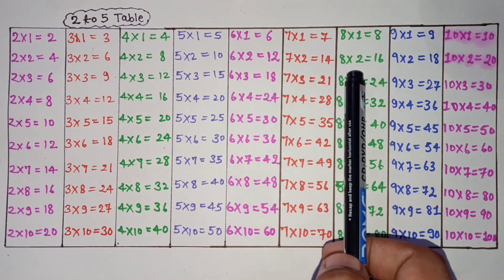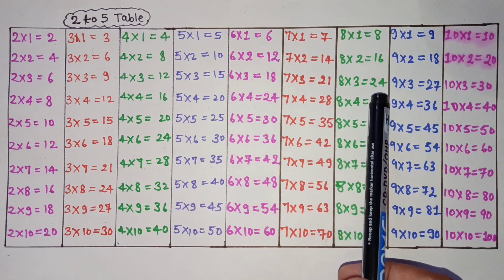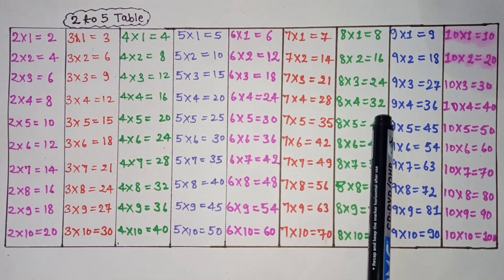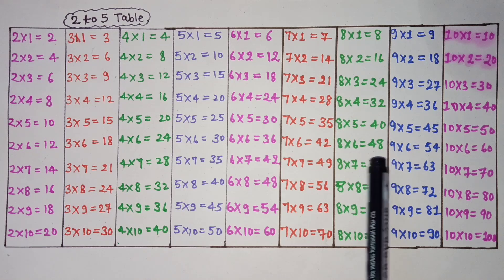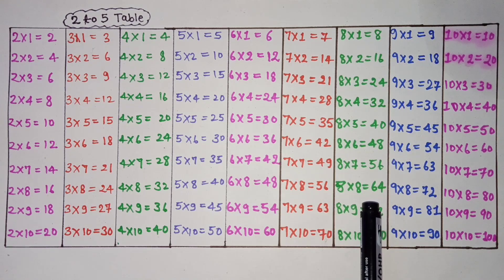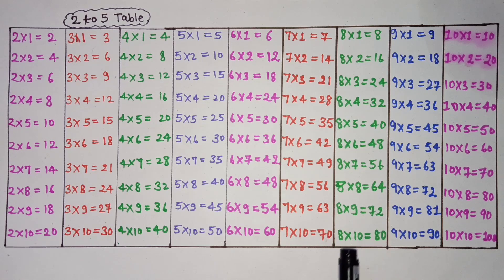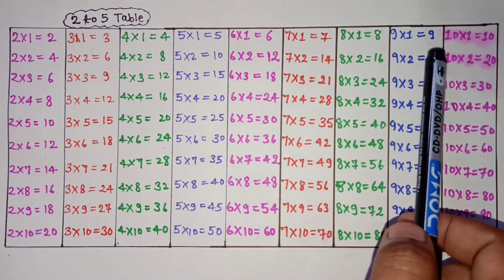8 ones are 8, 8 2's are 16, 8 3's are 24, 8 4's are 32, 8 5's are 40, 8 6's are 48, 8 7's are 56, 8 8's are 64, 8 9's are 72, 8 10's are 80.